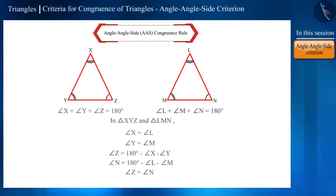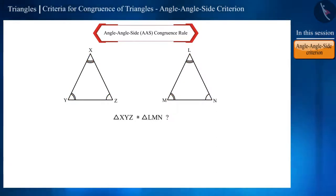So, if the three angles of any two triangles are equal, then can we call those triangles congruent?